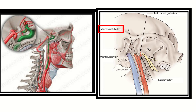In this picture, we can see the internal carotid artery. It arises from the common carotid artery, which bifurcates into external carotid artery and internal carotid artery. The internal carotid artery enters the cranial cavity through a canal, and this canal is known as the carotid canal. So internal carotid artery passes through the carotid canal.